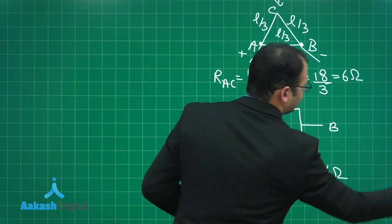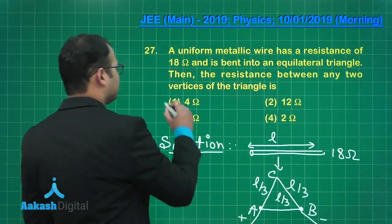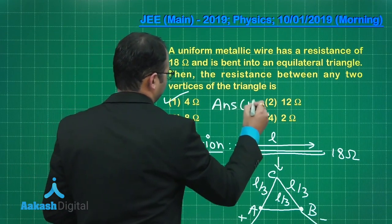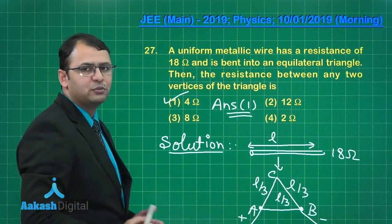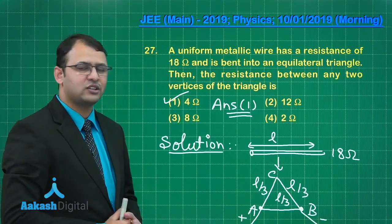Let's see what is the net resistance we can obtain here. Out of these four, option 1 is the right answer to this question. Let's move ahead and see our next question, that is question number 28.